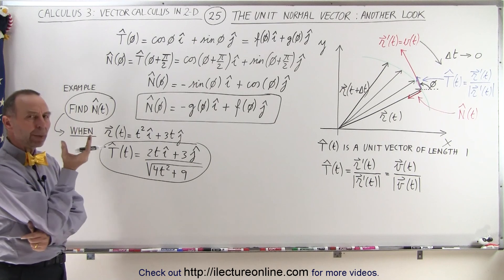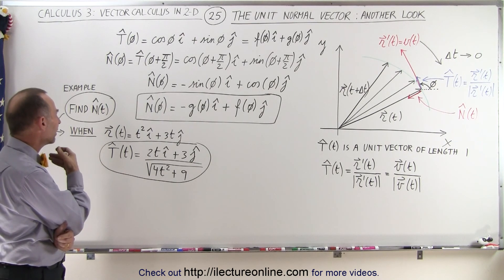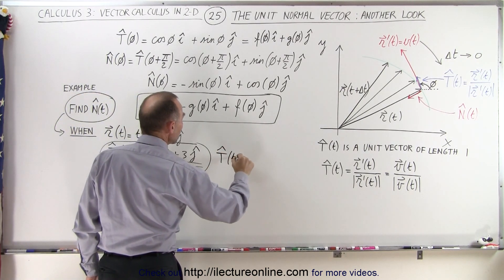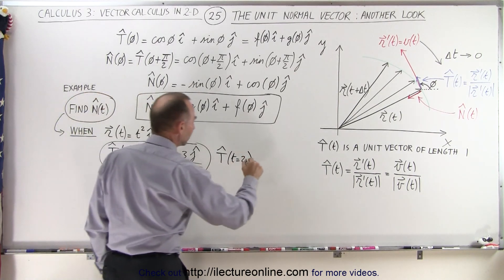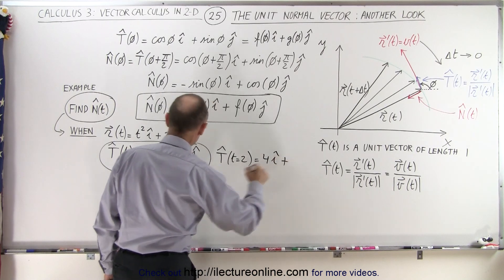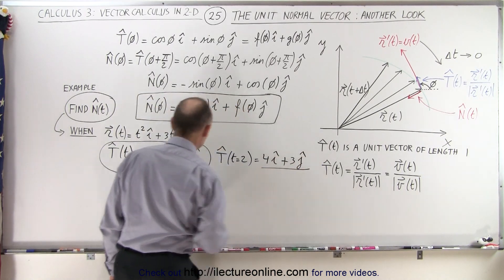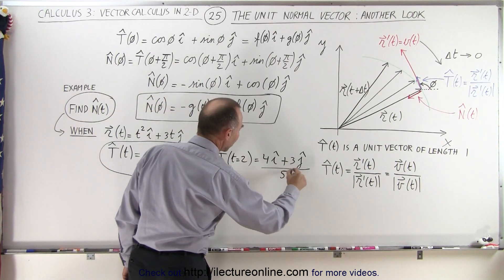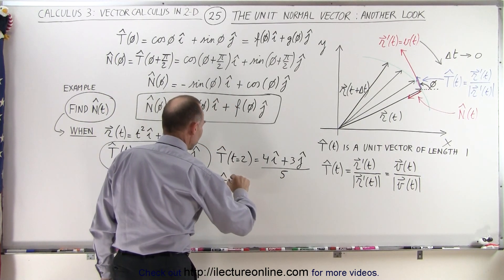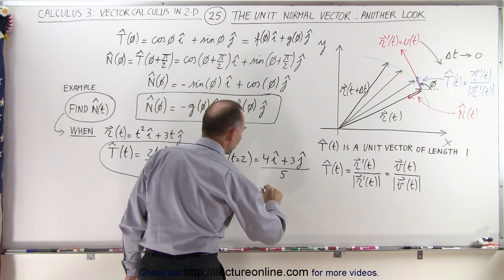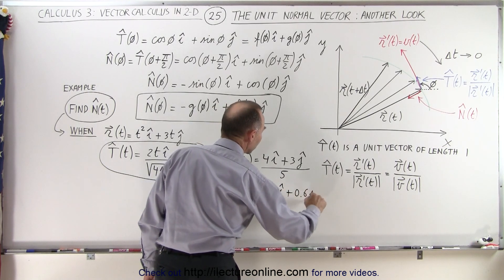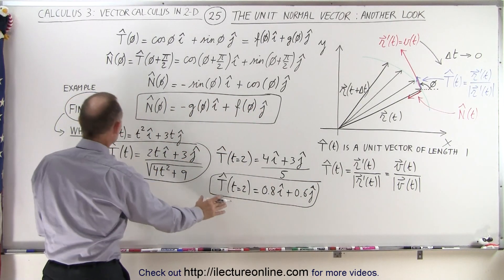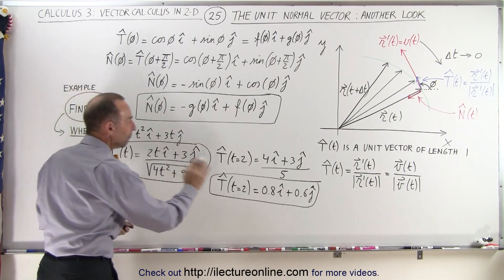Next, we evaluate it at some value of t — let's use t equals 2. The unit tangent vector at t=2 gives us 4 in the i-direction plus 3 in the j-direction, divided by the square root of (4×4 + 9), which is the square root of 25, which is 5. So the unit tangent vector at t=2 equals 0.8 in the i-direction plus 0.6 in the j-direction.